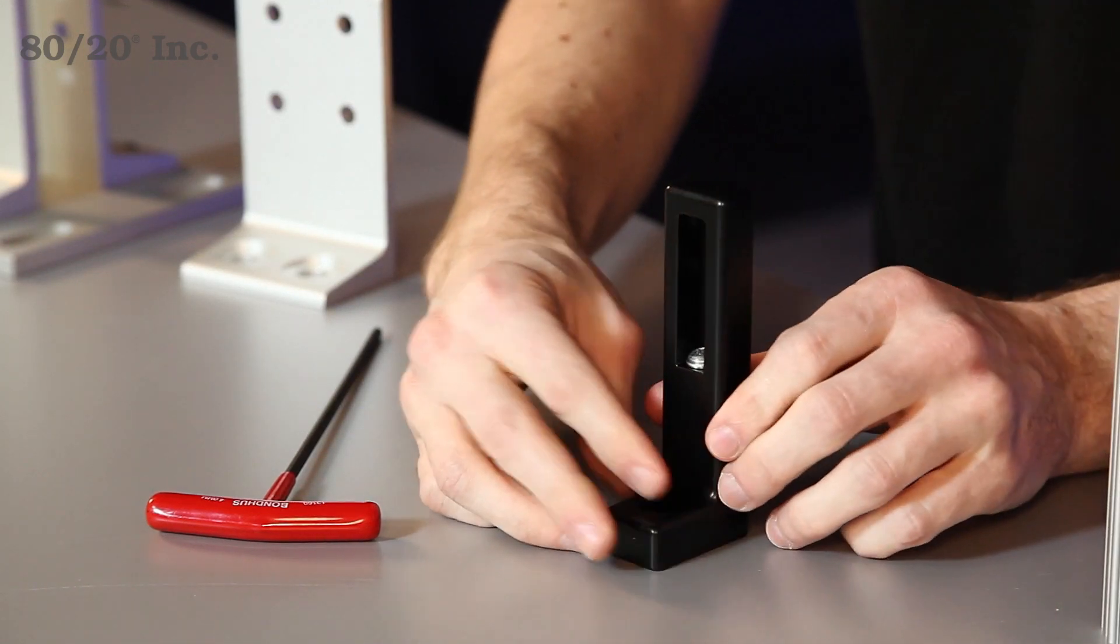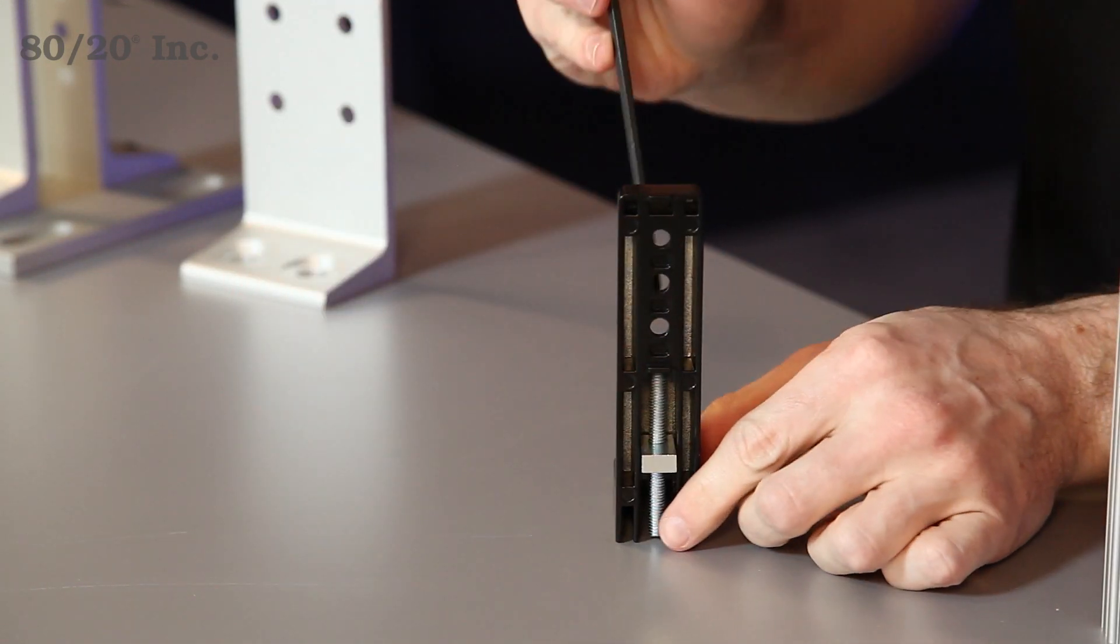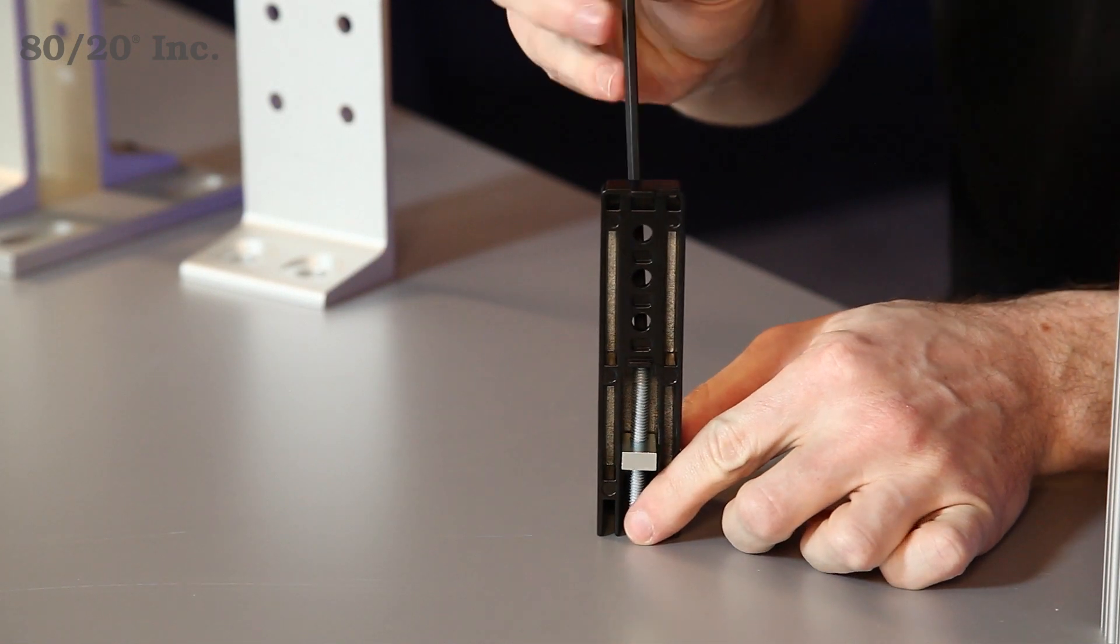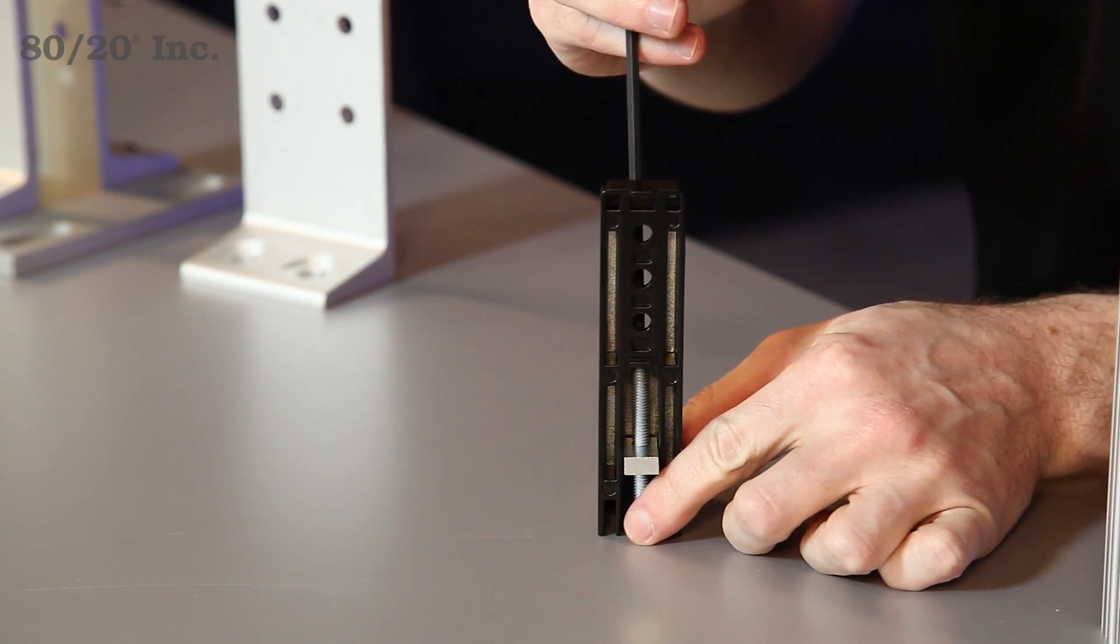Now if you want to adjust the height, you simply take this bolt on the front side, take your wrench, and raise or lower it to the desired height that you need.